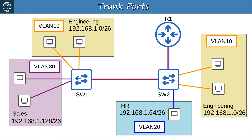Looking at the diagram again: a PC in VLAN10 wants to send traffic to another PC in VLAN10. The traffic goes to SW2, which forwards it to SW1 with a tag indicating it belongs to VLAN10. SW1 receives the frame and, because the destination is also in VLAN10, it forwards the traffic to the destination. Remember, a standard Layer 2 switch will only forward traffic within the same VLAN — it will not forward traffic between VLANs.